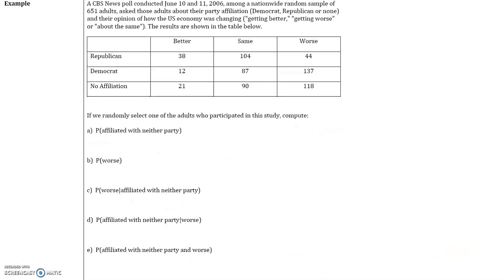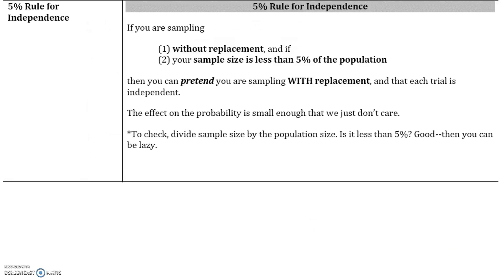The second one, please try by yourselves and we will go over this in class. Now let's look at the 5% rule for independence. If you're sampling without replacement — for example, if I have a thousand people and I'm selecting two people at random, that means I'm not replacing the individual — and your sample size is less than 5% of the population, then you can pretend you're sampling with replacement and that each trial is independent, because the effect on probability is small enough that we just don't care.